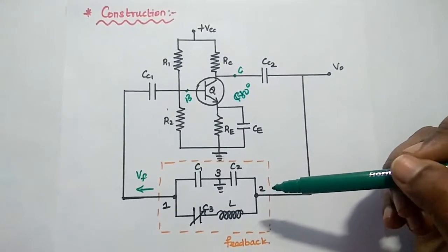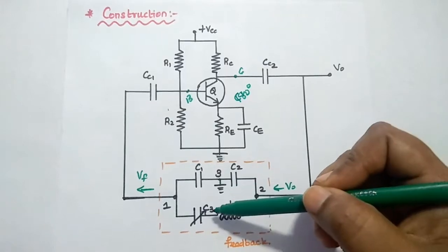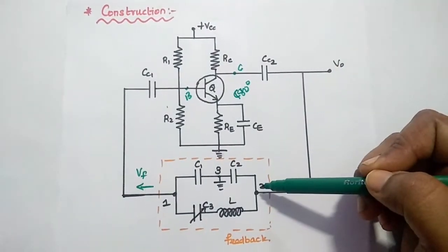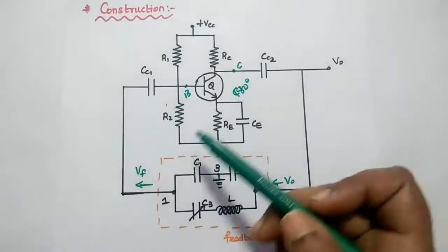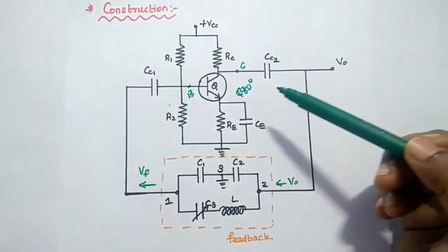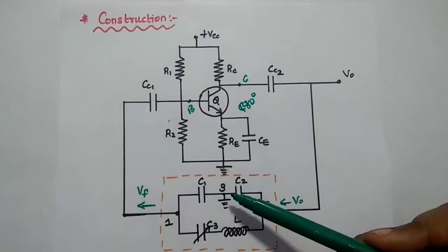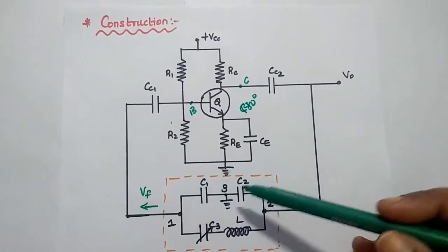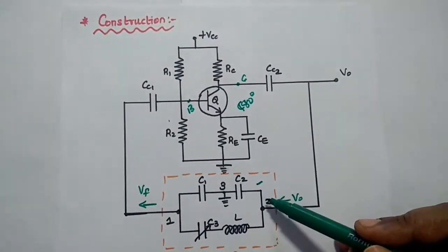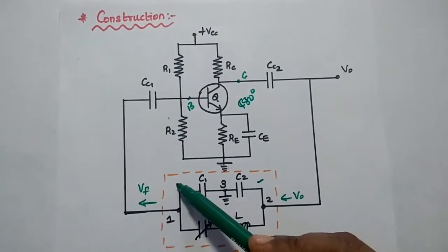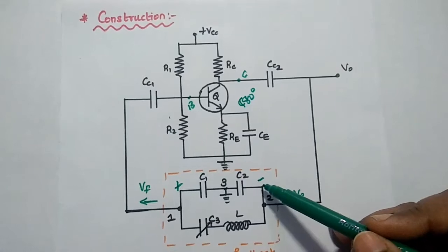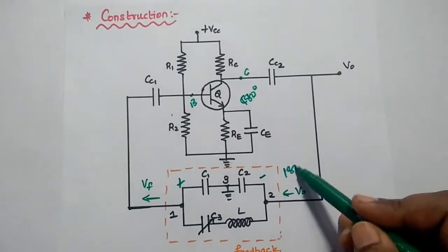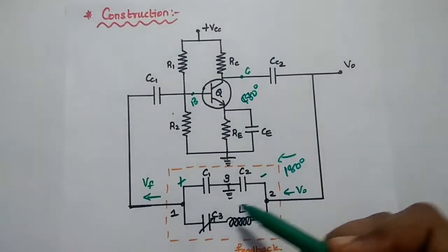In the feedback circuit, we have three capacitors C1, C2, and C3, and one inductor L. The output of the amplifier is given as input to this feedback network, and the feedback signal VF is returned to the amplifier. In the feedback circuit, terminal VF is at positive potential while the other terminal is at negative potential with respect to terminal 3. Hence, the feedback network introduces a 180-degree phase shift between terminals 1 and 2.